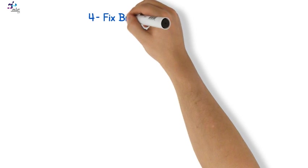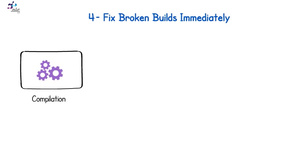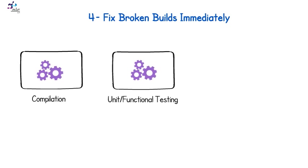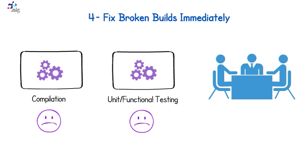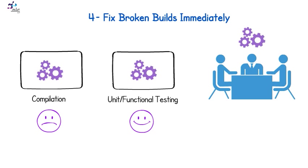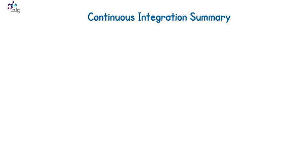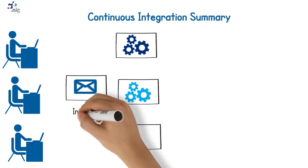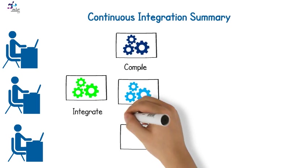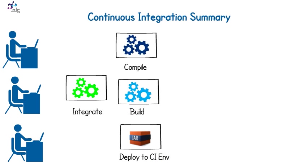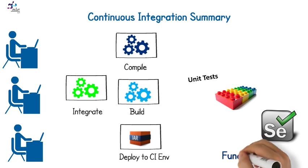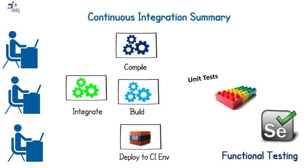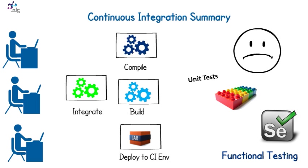4. Fix broken builds immediately. In cases where the build is broken either in the compilation phase or functional testing, the build process is failed and team members are notified, and it must be fixed immediately to keep clean code always on the mainstream. So in a nutshell, continuous integration is a practice to continuously integrate code from all team members together, compile it, build it, deploy it to the CI environment, and test the build at the level of unit and functional testing, and announce success or failure to everyone. The team must fix any error immediately, regardless of who wrote the broken part — it is the team's responsibility.